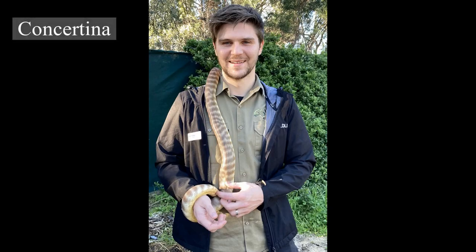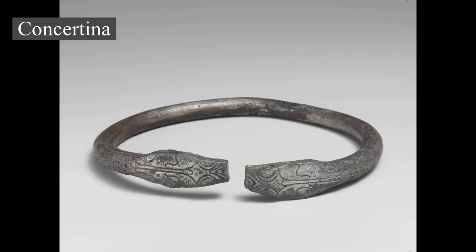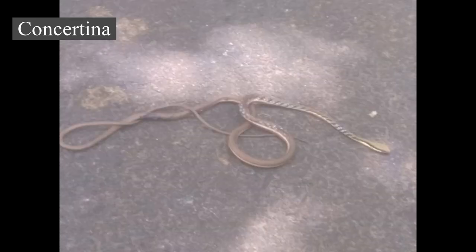Concertina locomotion is used when pushpoints are absent but there is not enough space to use sidewinding because of lateral constraints, such as in tunnels. In this mode, the snake braces the posterior portion of its body against the tunnel wall while the front of the snake extends and straightens. The front portion then flexes and forms an anchor point, and the posterior is straightened and pulled forward. This mode of locomotion is slow and very demanding — up to seven times the cost of laterally undulating over the same distance — due to repeated stops and starts and the necessity of actively bracing against the tunnel walls.